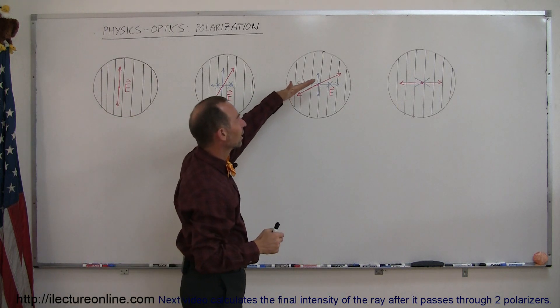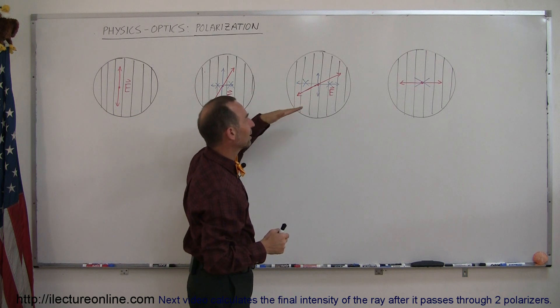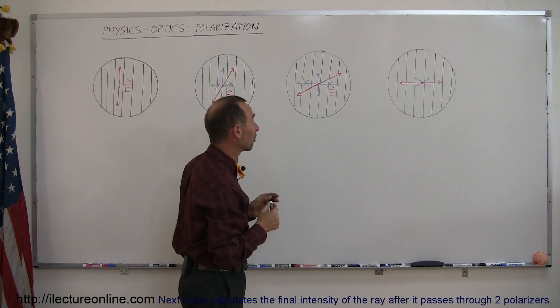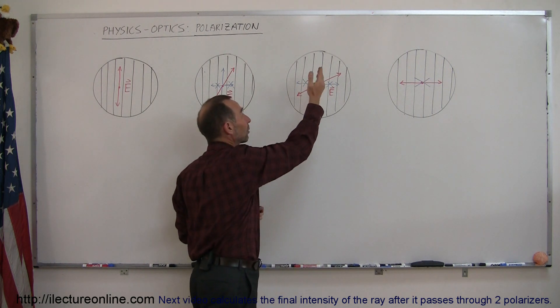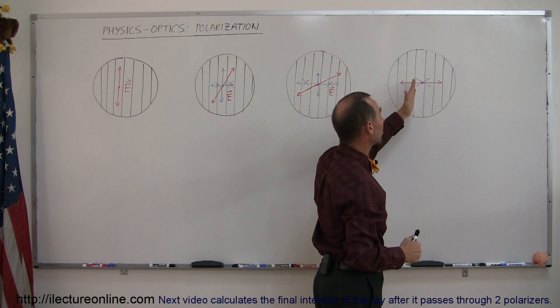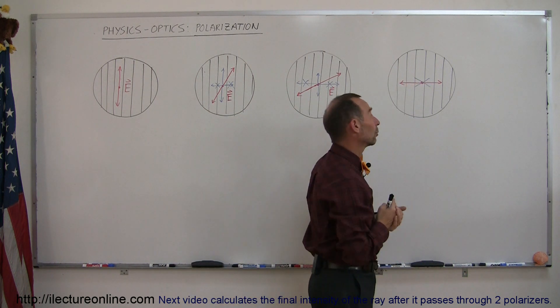And you can see, as the light is rotated more and more so that the electric field oscillations are perpendicular towards the orientation of the polarizer, less and less of the light will get through. And eventually, if it's completely perpendicular to the direction of the polarizer, none of the light will get through.